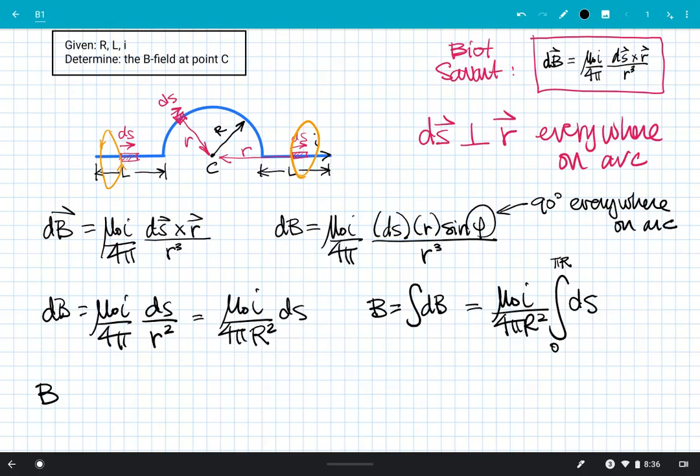What I get is B equals μ₀I over 4πR². DS from zero to πR, of course, just gives me πR—that arc length of half a circle there. So what I get is μ₀I over 4R. That's the magnitude of my B.